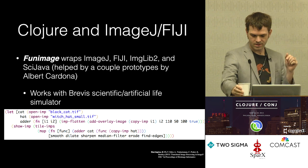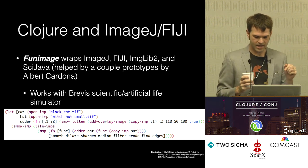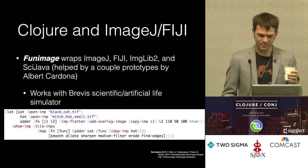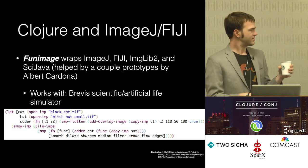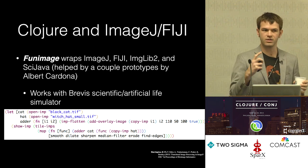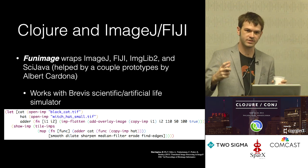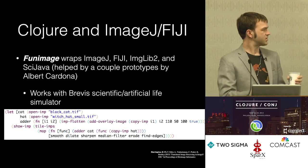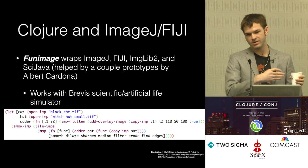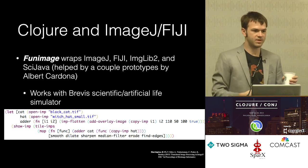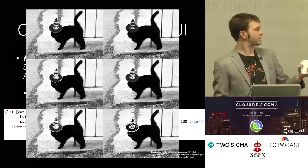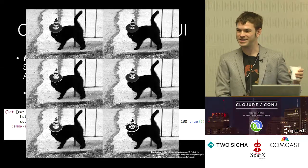I was giving a talk down in Maryland recently — it was last month, so it was Halloween. This was to a bunch of image processors who are used to writing long Java code for things. I wanted to show them concise code that could do a lot. I wrote this little thing: you iterate, you map your function over a bunch of images, you concatenate them — it's basically a MapReduce type of call — and you put hats on cats. That was my Halloween celebration.